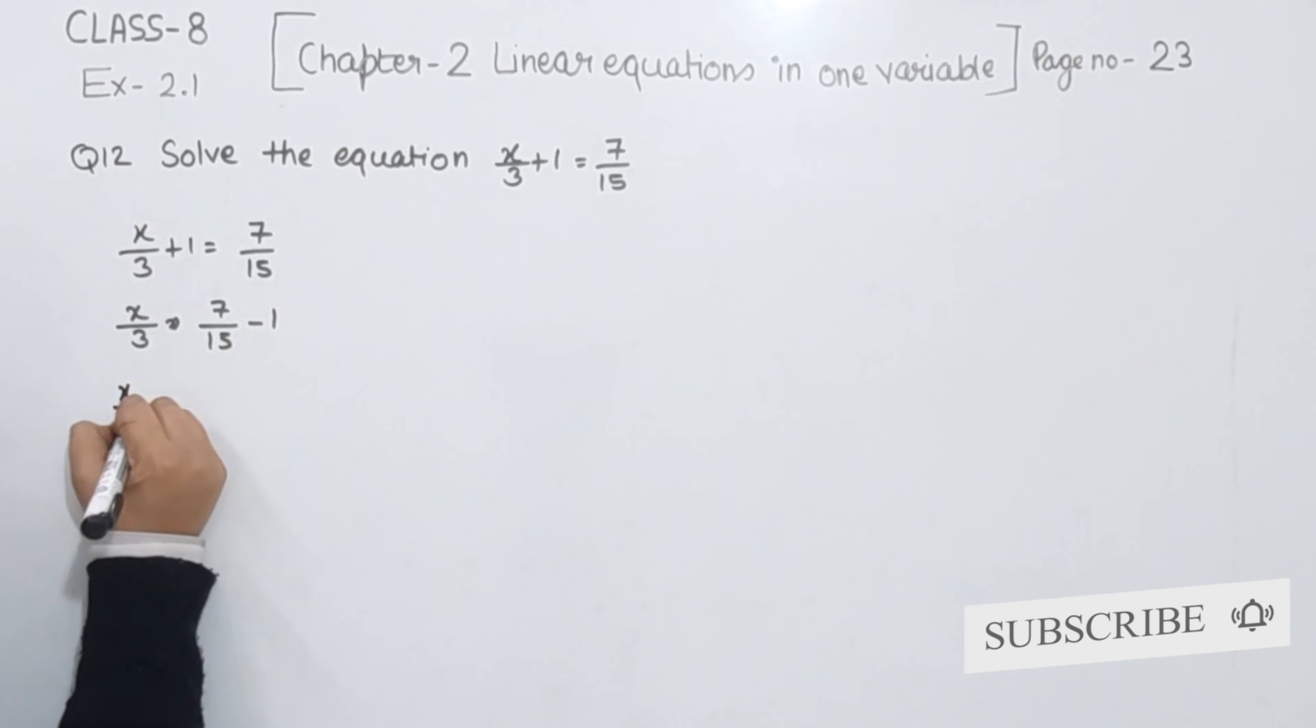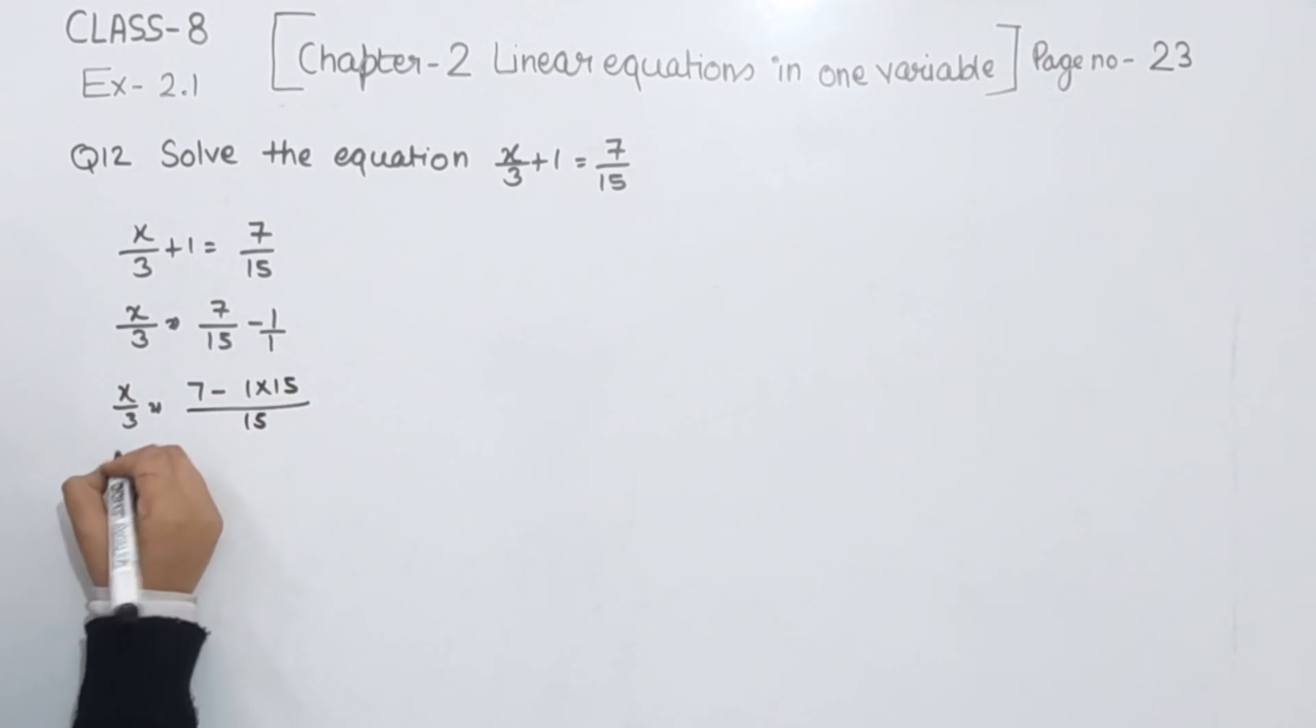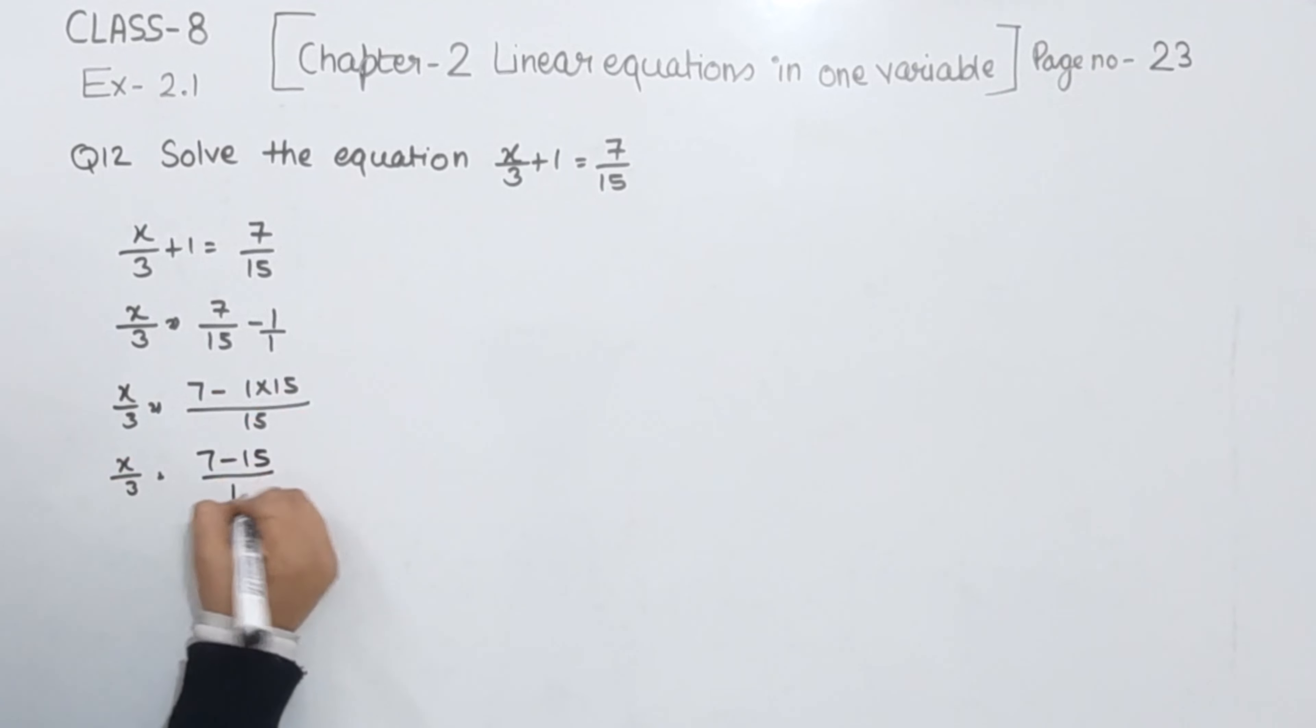Now we are going to equal the denominators, so 7 minus 1 multiply by 15. Now x/3 is equal to (7-15)/15.